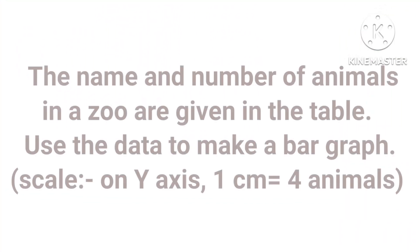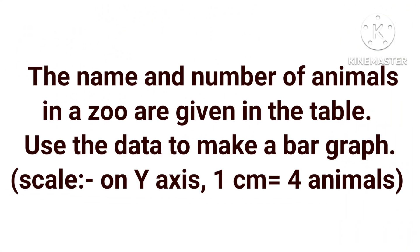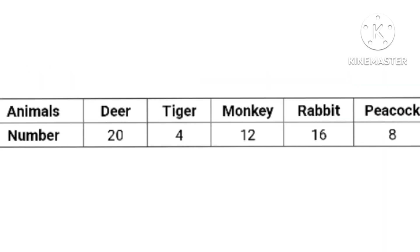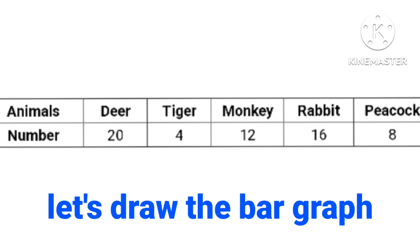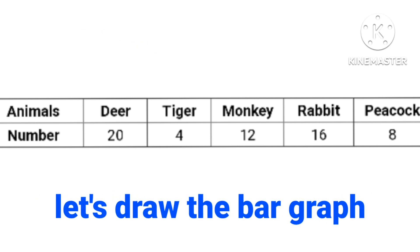Now let's discuss an example. The name and number of animals in a zoo are given in the table. Use the data to make a bar graph. Here, one centimeter equal to four animals should be taken as the y-axis. This is the given table, and let's draw the bar graph according to this data.